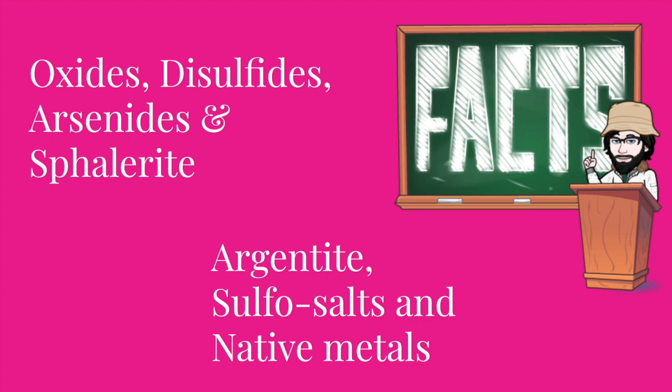Some facts to remember. You must know that the oxides, disulfides, arsenides and sphalerite are the most refractory ore minerals and are likely to preserve evidence of their original conditions of formation. Whereas minerals such as pyrrhotites or copper iron sulfides, argentite, sulfosalts and native metals are among the most readily re-equilibrated ore minerals and thus are the least likely to reflect initial formation conditions.